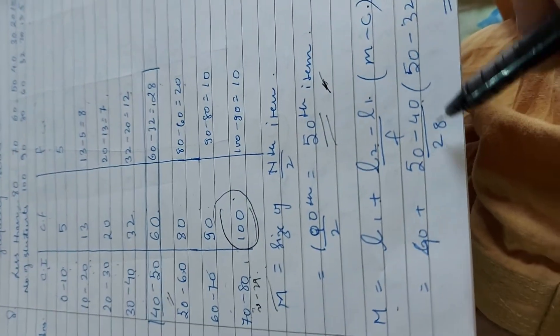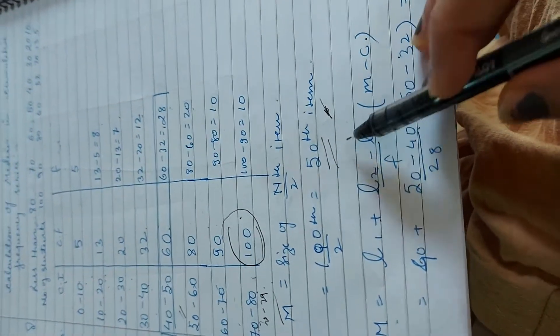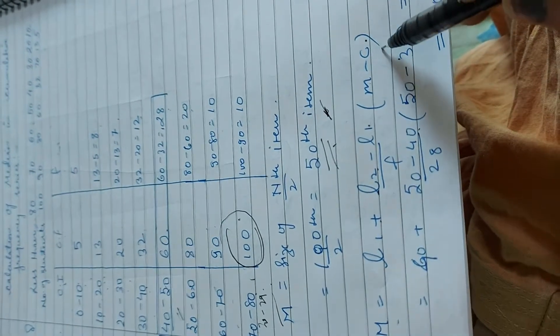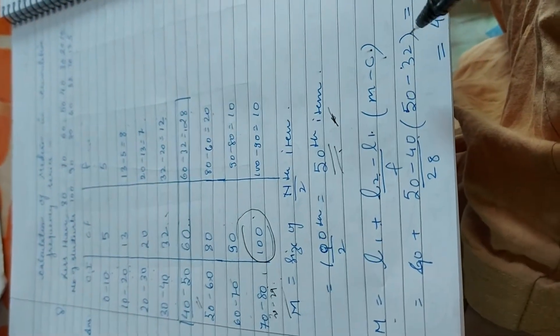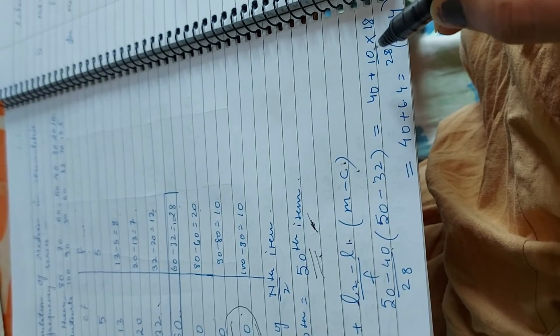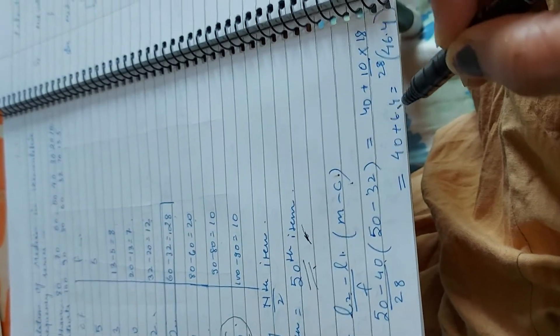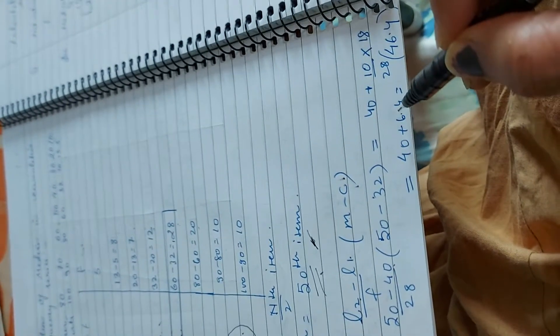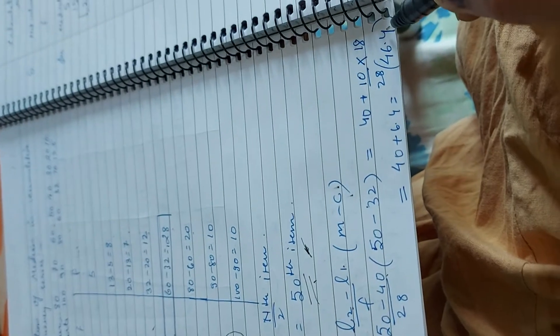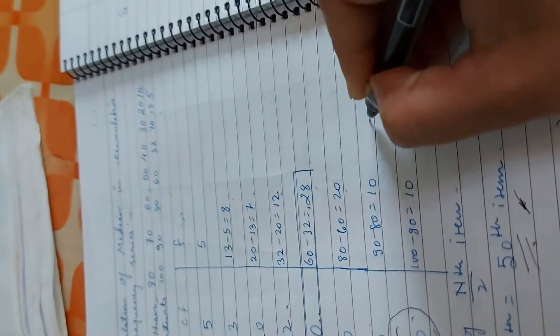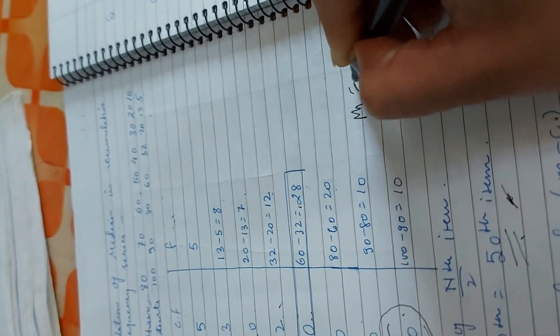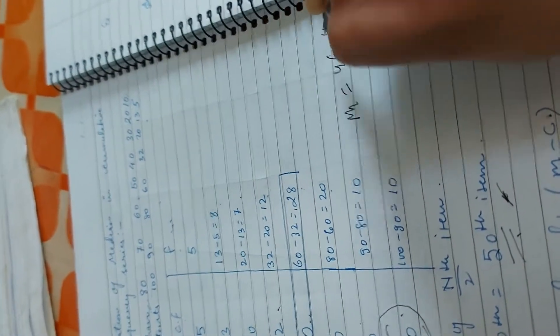So we have written 28 and m is 50 and c is just above this number, cumulative frequency. So m minus c, what we get? 40 plus 10 by 28 into 18. When we calculate, we get 40 plus 6.4. That is, answer is median is 46.4. So median is 46.4.